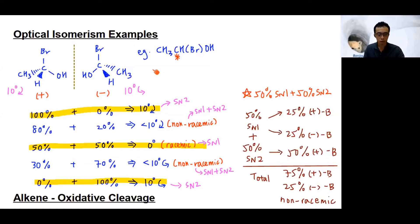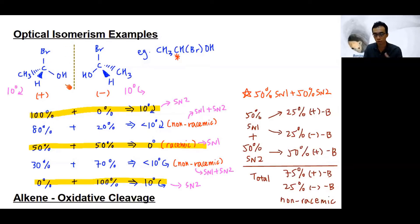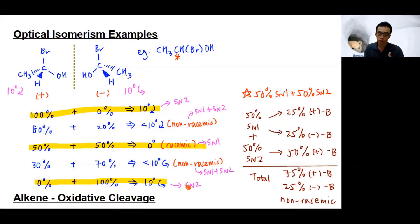The combinations of optical isomers we encounter in the syllabus are the pure sample and the racemic mixture. If I have 100% plus isomer and 0% minus isomer, the optical activity follows the plus isomer: 10 degrees clockwise. At the other extreme, 0% plus and 100% minus isomer, the optical activity follows the minus isomer: 10 degrees counter-clockwise.